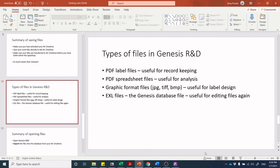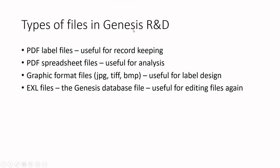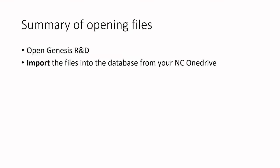In summary, we talked about the different types of files you can save: a PDF label file, a PDF spreadsheet file — which I often recommend so students can see each ingredient's nutrient contribution and adjust formulations accordingly — a graphic format file, and the EXL file, which is the Genesis database file that can only be opened in Genesis. Teachers may ask for the EXL file as part of an assignment to see your work. Remember to use 'open from file' or import that file into your database — many students struggle because they don't use the correct method to reopen their recipe.